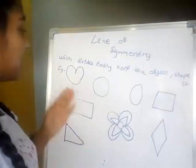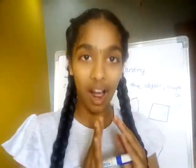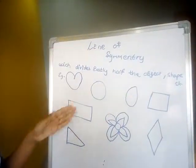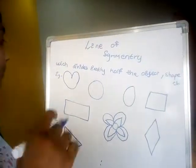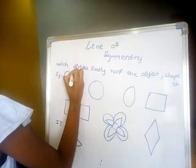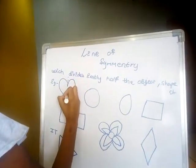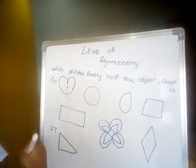First one is a heart. How will we divide the heart? We will divide the heart only at a straight vertical line.